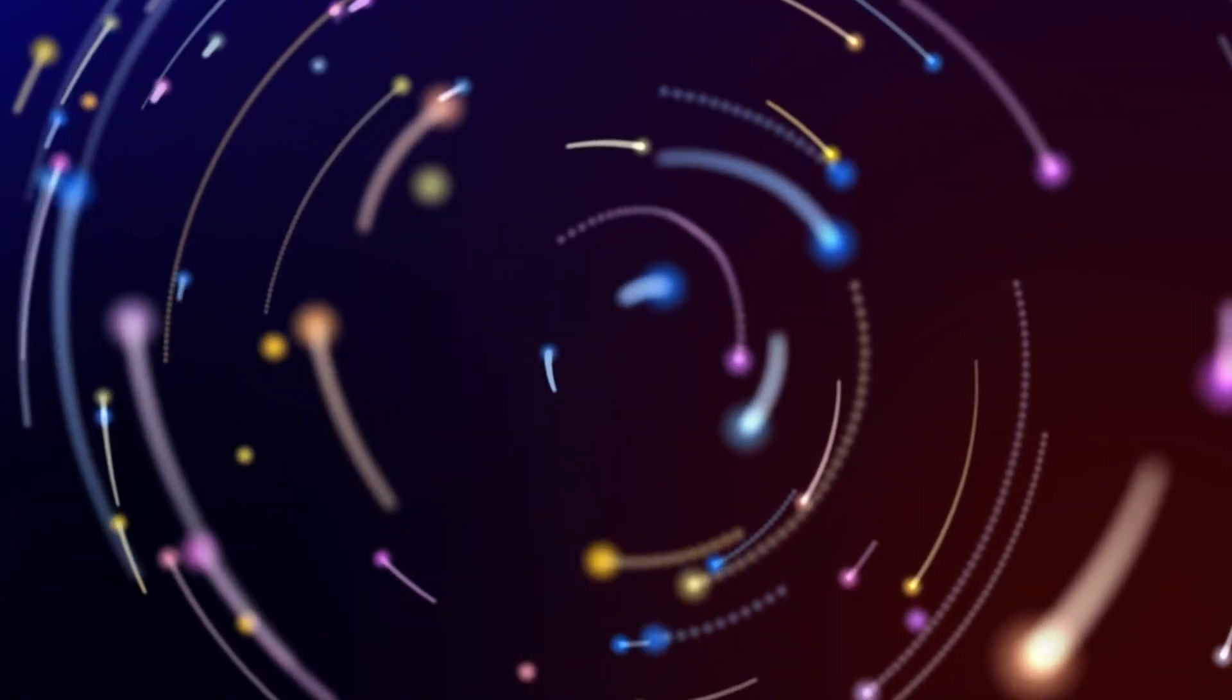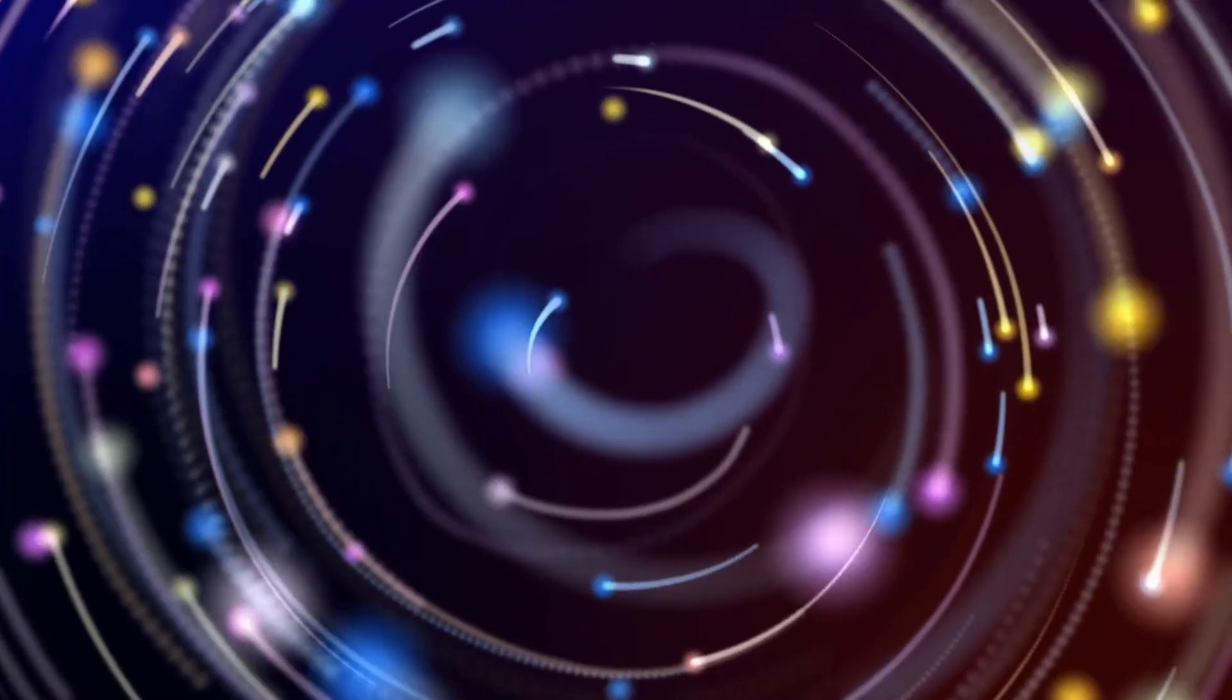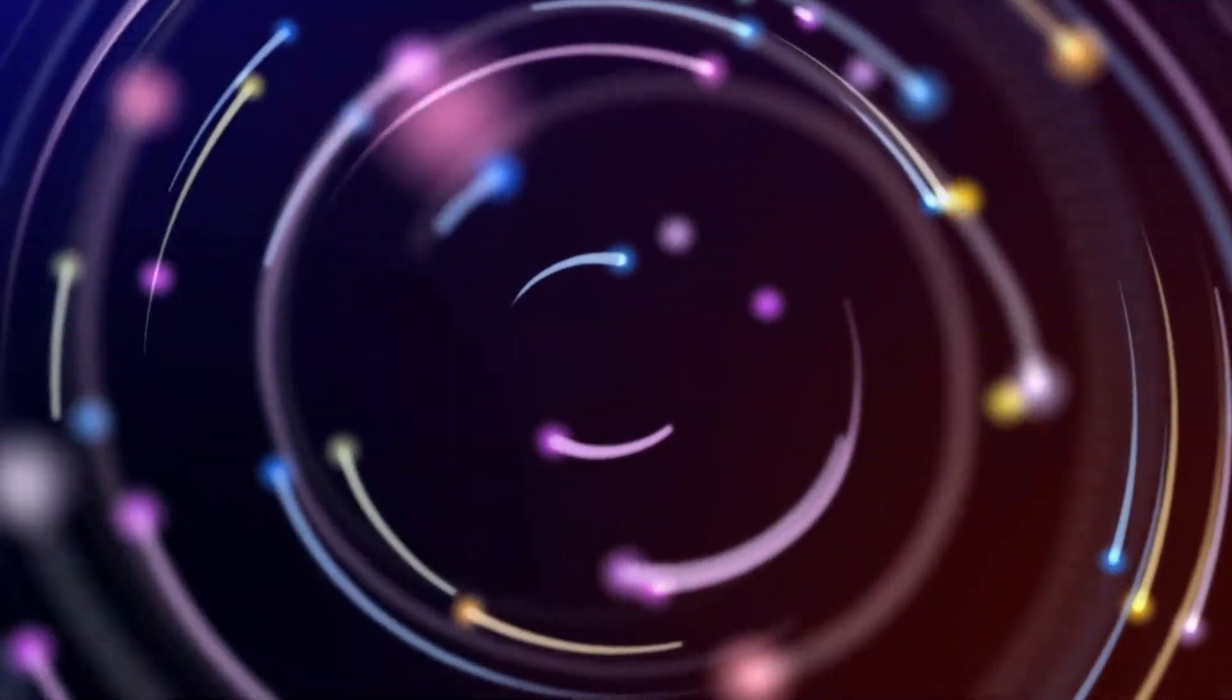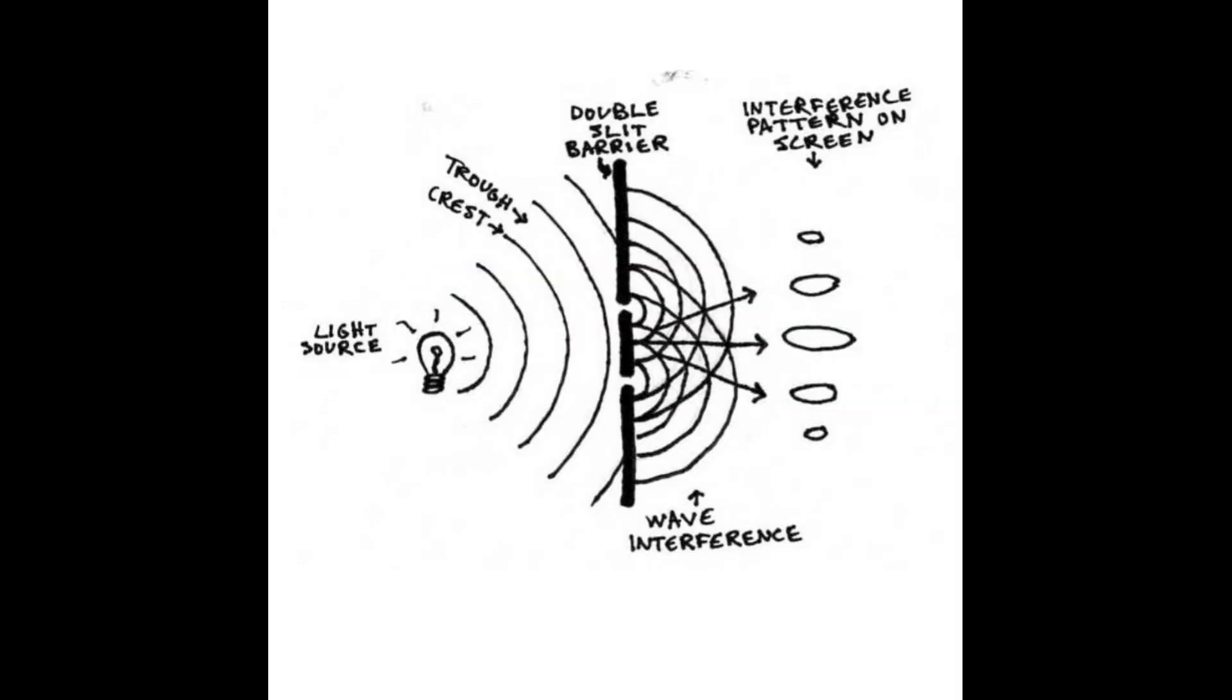The double-slit experiment conducted by Thomas Young in the early 19th century remains a fundamental demonstration of wave-particle duality. When monochromatic light passes through two slits, it produces an interference pattern on the screen that suggests wave-like behavior.